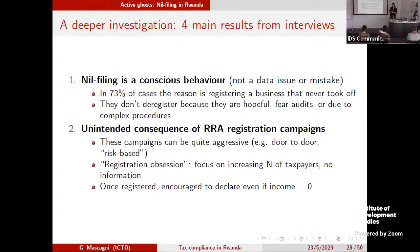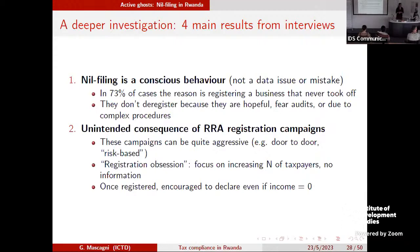Perhaps the most important result from those interviews is that a major reason behind the prevalence of nil filers is the RRA's aggressive mass registration campaigns — door-to-door campaigns, or in one case automatically registering everybody with a trade license, assigning taxpayer identification numbers to over 50,000 people without even informing them they were registered. The RRA later reversed those registrations, recognizing it was not conducive for anyone. We were able to go back to the data and confirm a statistical link between months with mass registration campaigns and subsequent nil filing.